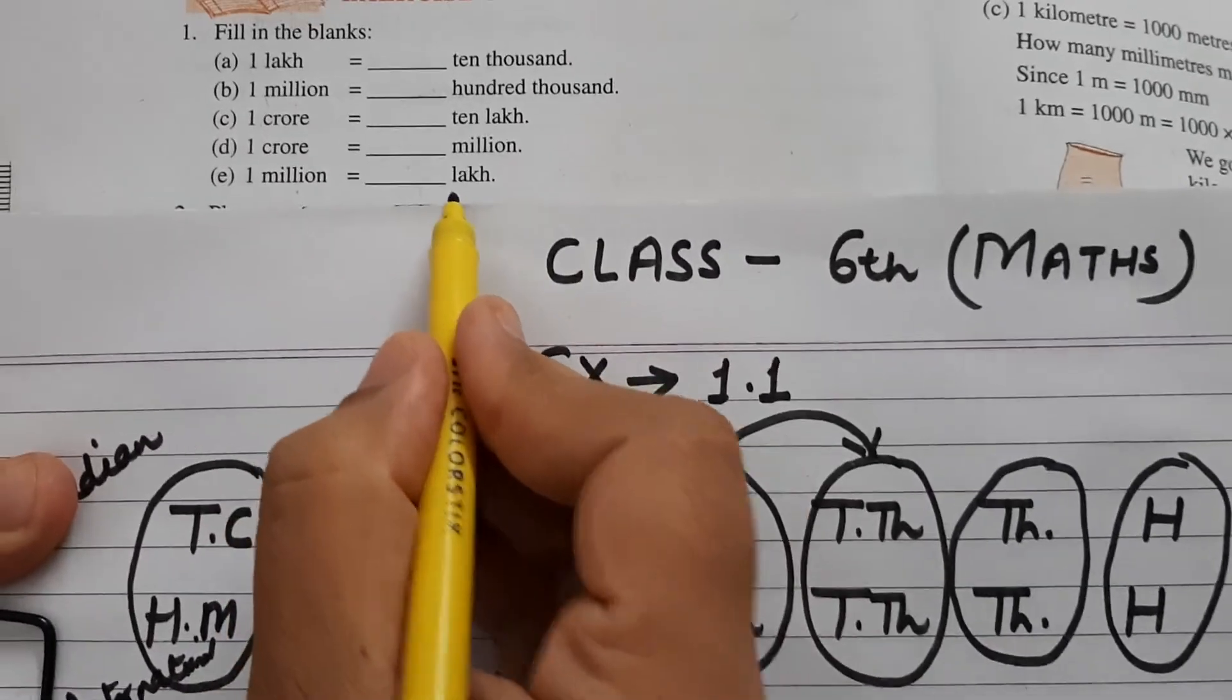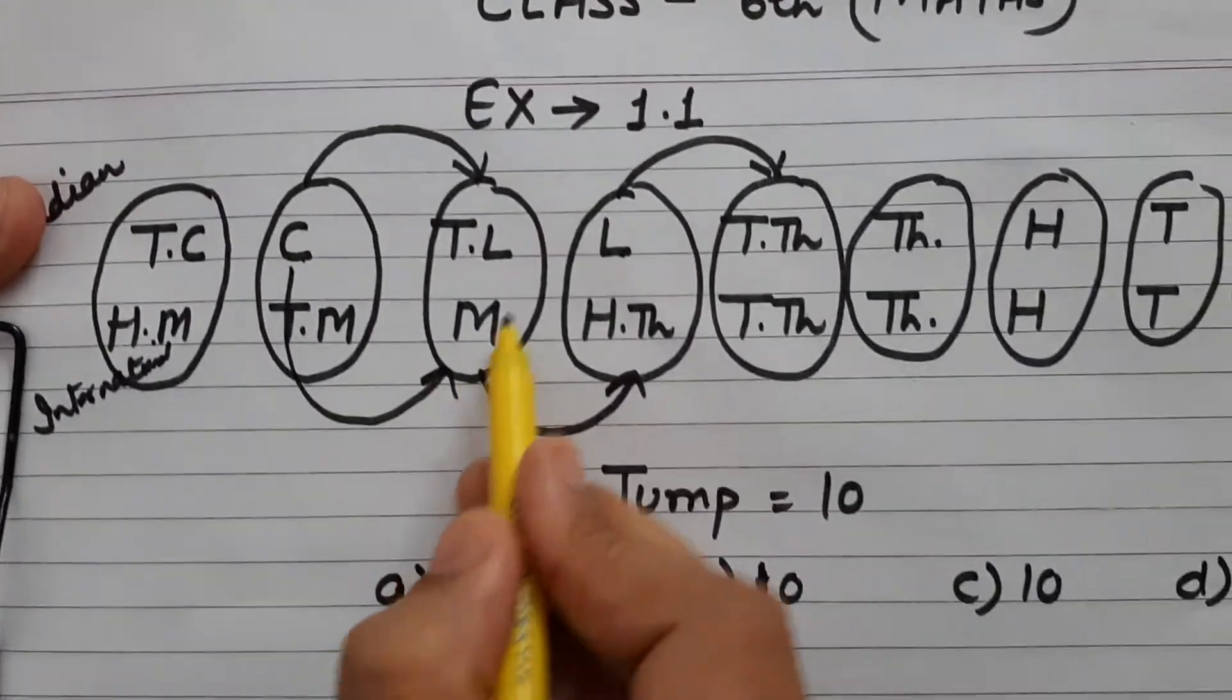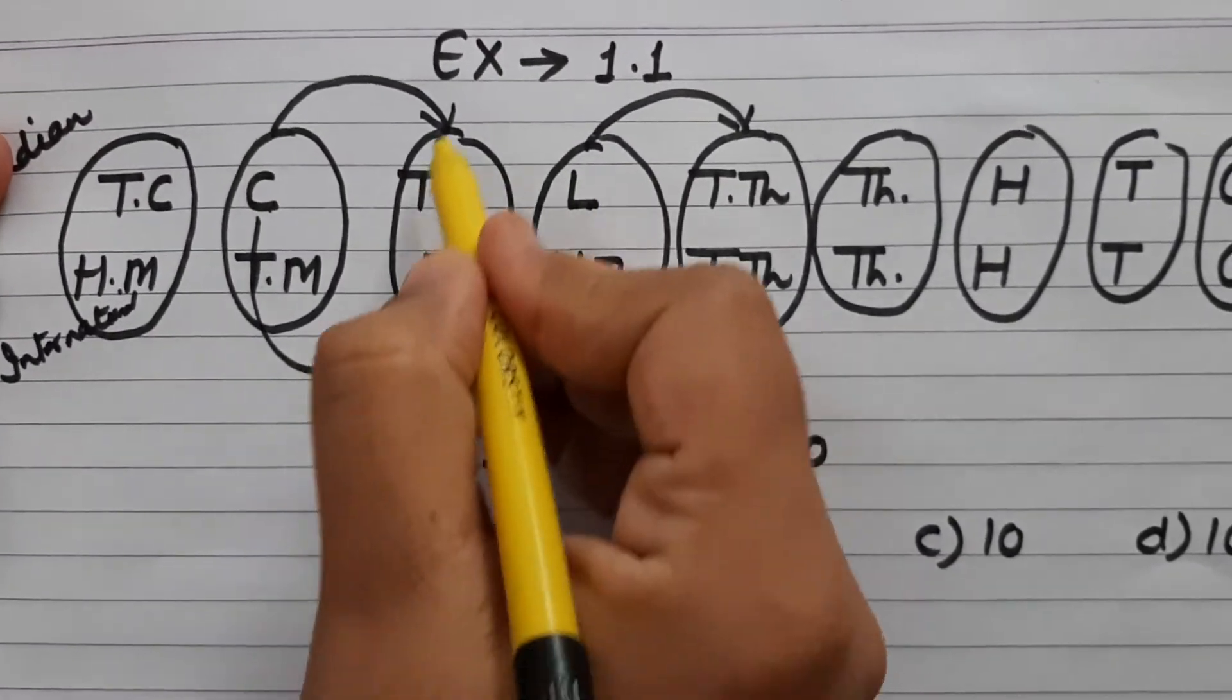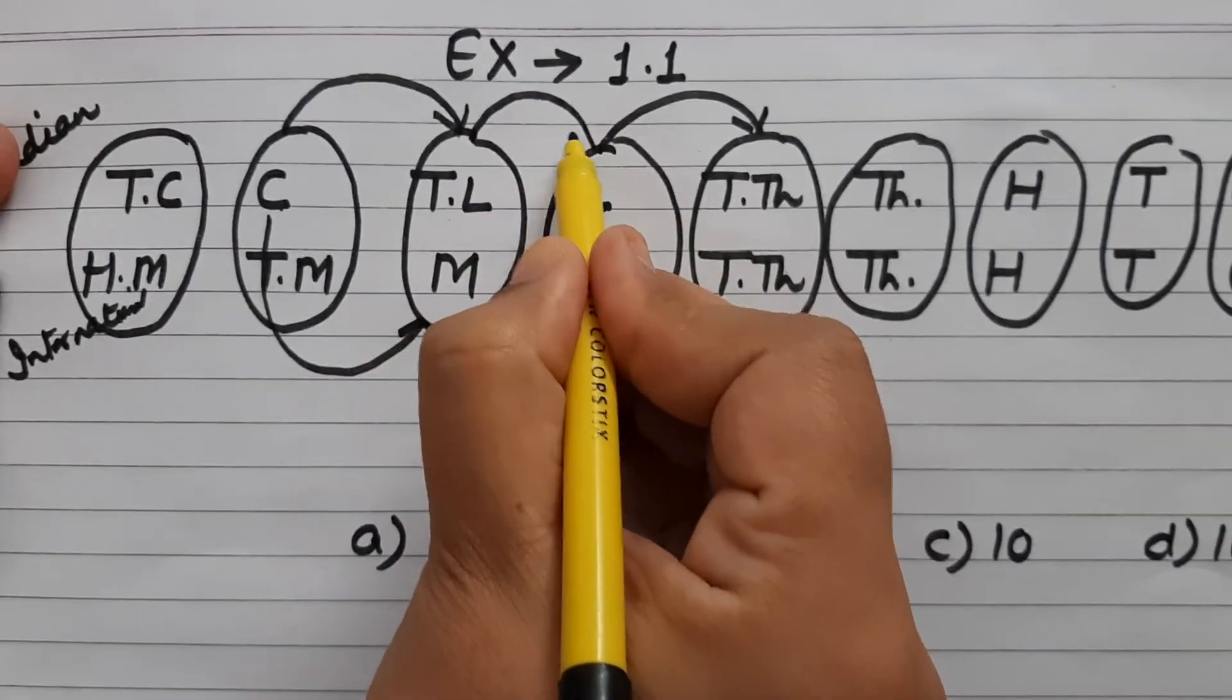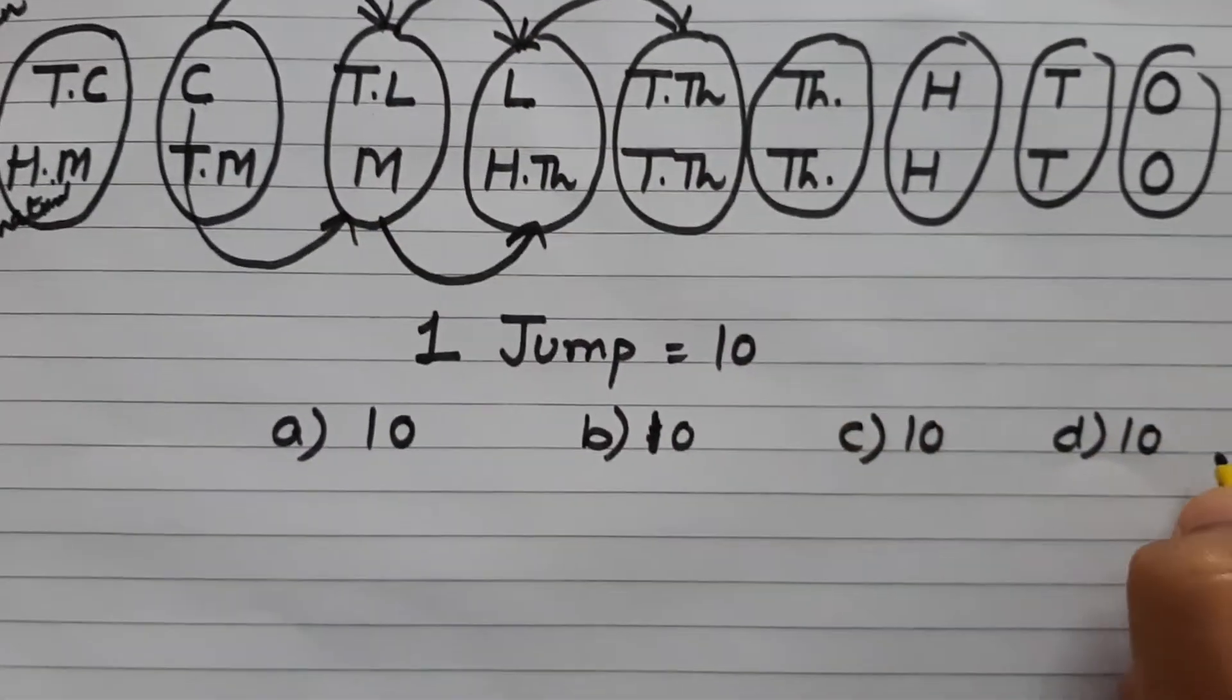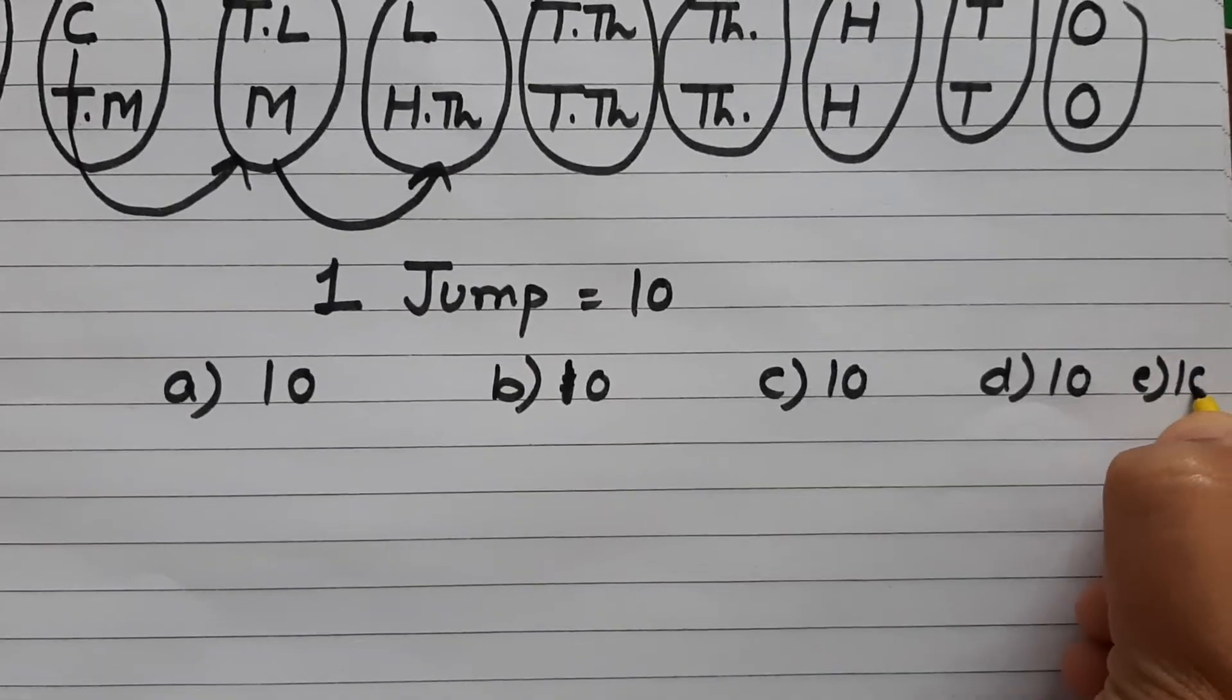One million equals to dash lakh. ये million का घर है, ये lakhs का. तो million को lakhs में जाने के लिए कितनी jumps चाहिए? One jump. तो इसका भी answer है ten.